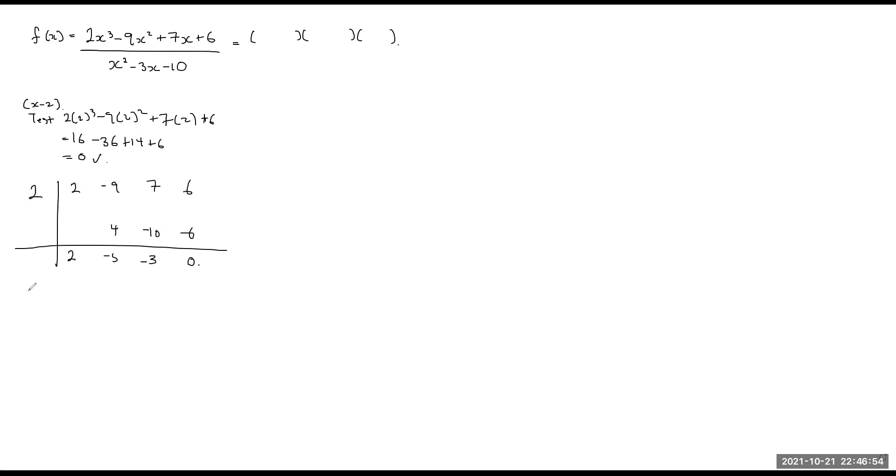Therefore, the numerator is going to be x minus 2, 2x squared minus 5x minus 3. So let me continue on with the factoring and then I'm going to replace the numerator, the function up above at the end.